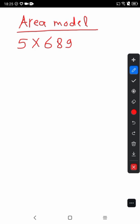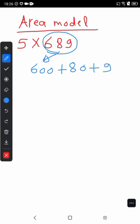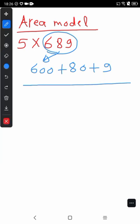Now we will use the area model to find the answer of 5 times 689. First, we expand this number. We have 600 plus 80 plus 9. Second step, we will draw a rectangle with 3 parts.